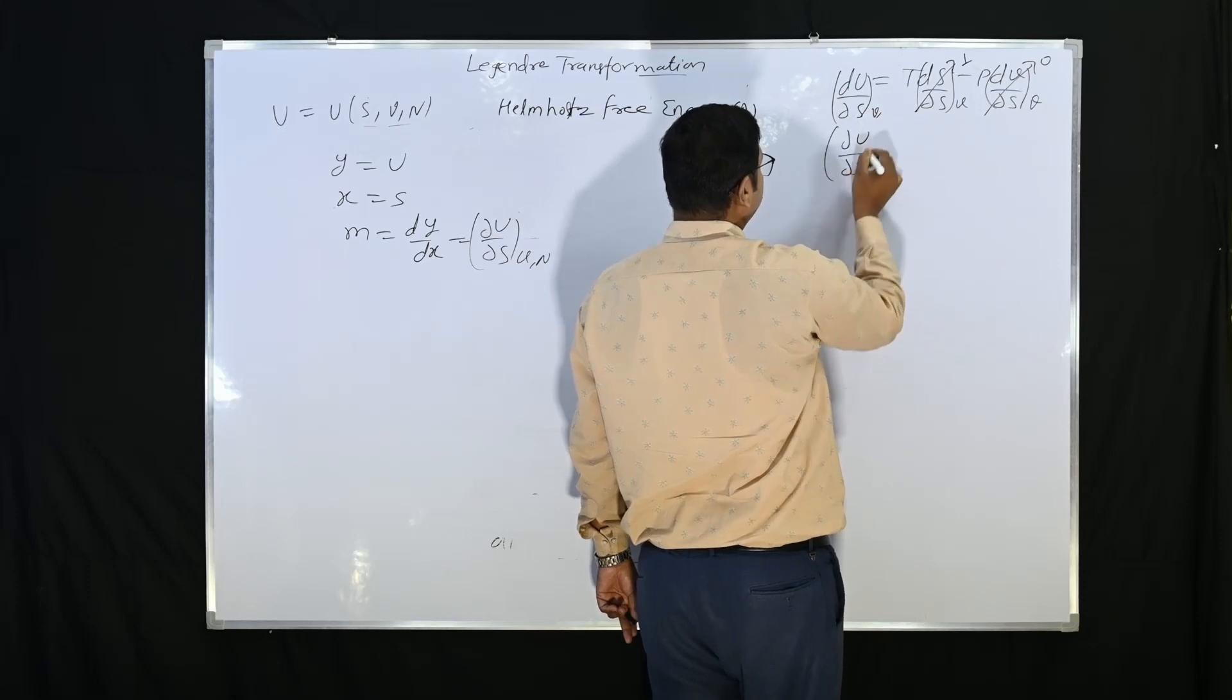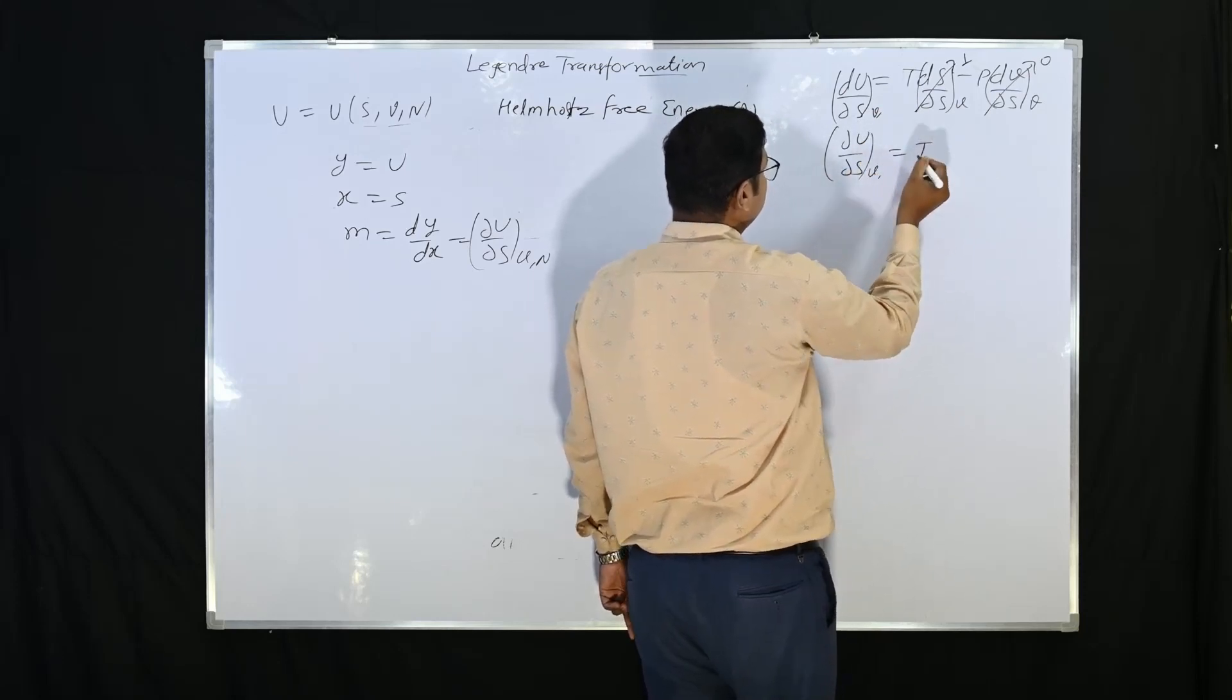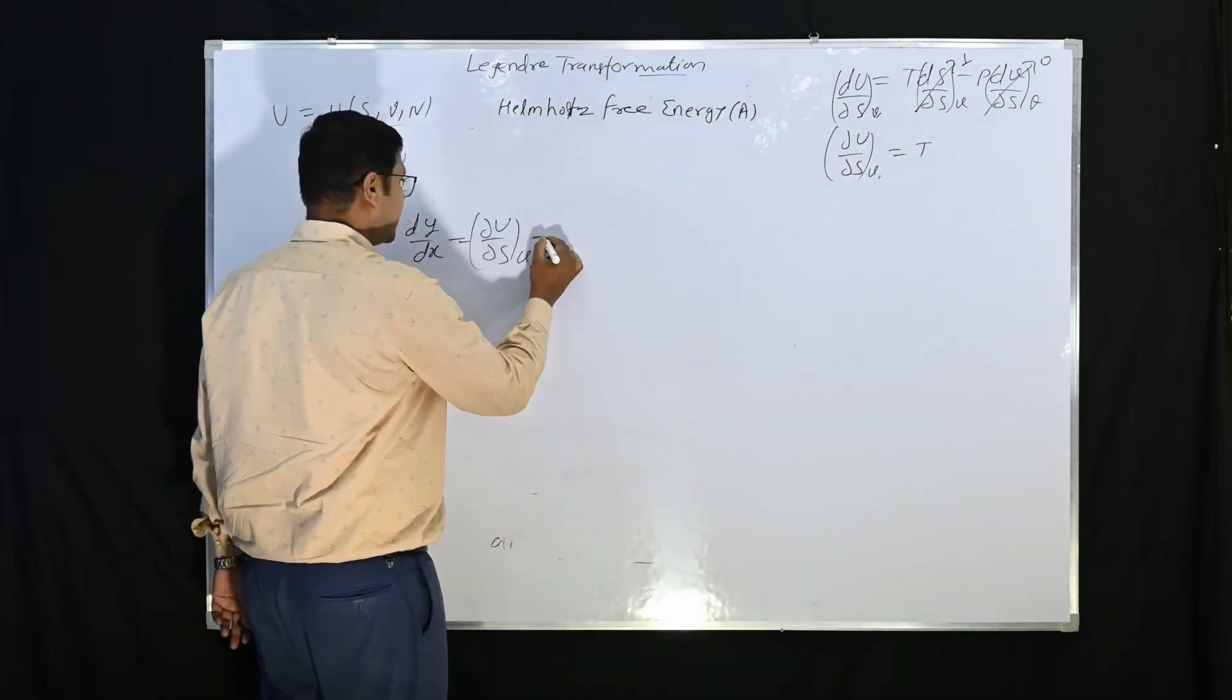So ∂U/∂S at volume constant is nothing but T. So here I can write T.